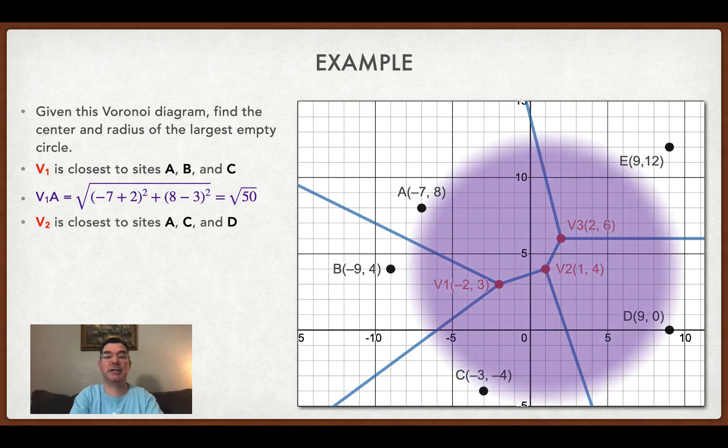And I'm going to compare that to the other distances. So now I'm looking at vertex 2 and that vertex is equidistant from site A, site C, and site D.